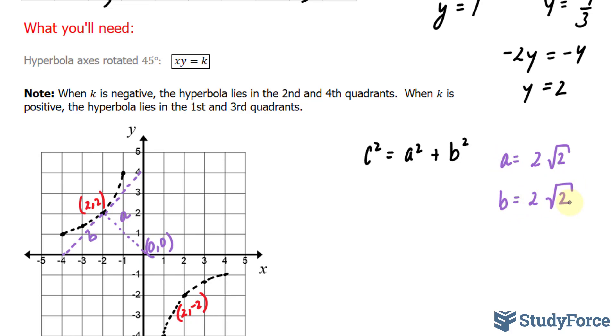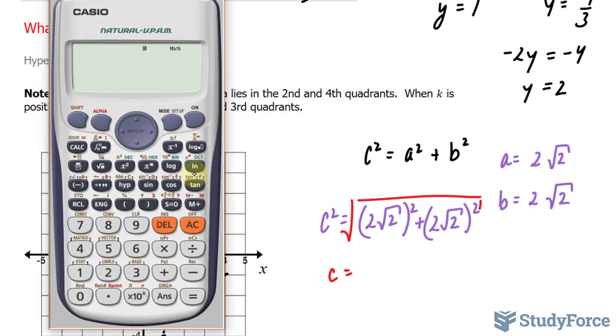When you find your c, that tells you the distance from the center to the focus. So let's go ahead and substitute these values. We have c squared is equal to 2 times the square root of 2 to the power of 2, plus 2 times the square root of 2 also to the power of 2. We'll square root both sides afterwards, giving us c. The square root of bracket 2 times the square root of 2 to the power of 2, plus bracket 2 times the square root of 2 bracket 2 gives us 4.